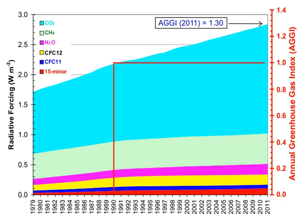Indirectly, human activity that increases global temperatures will increase water vapour concentrations, a process known as water vapour feedback. The atmospheric concentration of vapour is highly variable and depends largely on temperature, from less than 0.01% in extremely cold regions up to 3% by mass in saturated air at about 32 degrees Celsius.